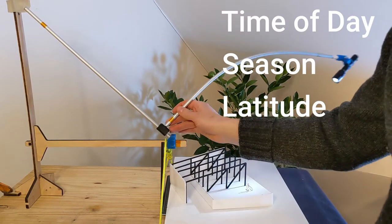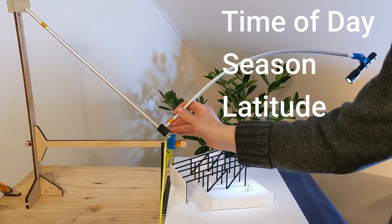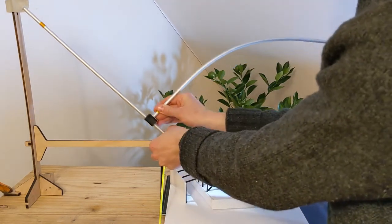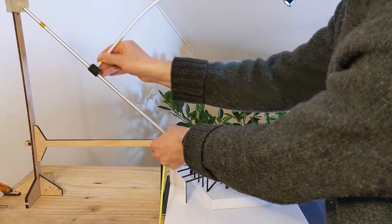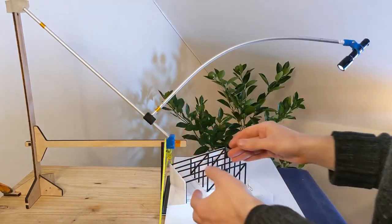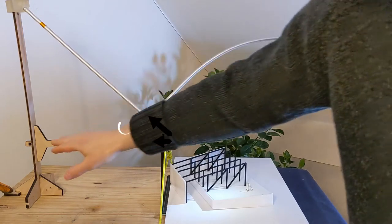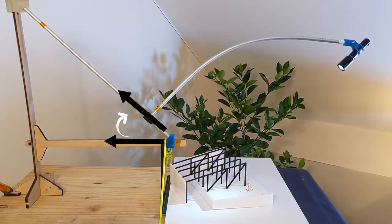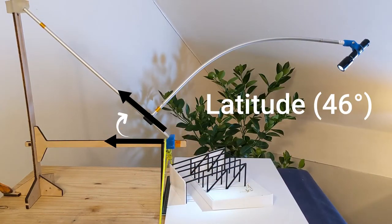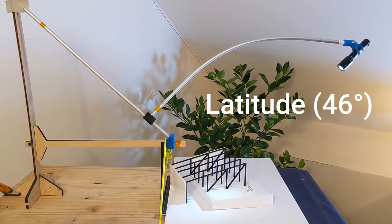Time of day can be varied by just rotating this arm, season can be varied by rotating this member up and down, and latitude is determined by the angle between this diagonal member and this horizontal member. So at the moment this is set to 46 degrees north, but that can be changed.